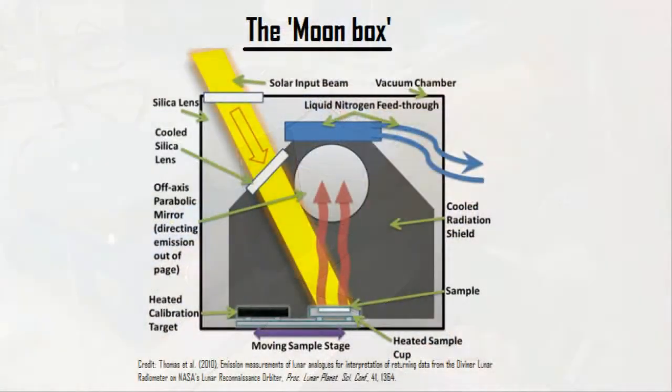Since the desiccation appears successful, it's time to remove the large sample cup from the desiccator and obtain its thermal infrared emission spectrum in the moon box. Here is a schematic diagram: the moon box consists of a sample cup and black calibration target at the bottom, both heated from below, a lamp simulating solar heating from above, and a liquid nitrogen cold radiation shield. The entire chamber is pumped out to vacuum conditions of less than 10 to the power of minus three millibars.